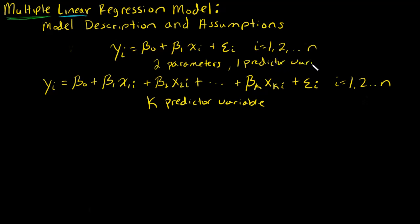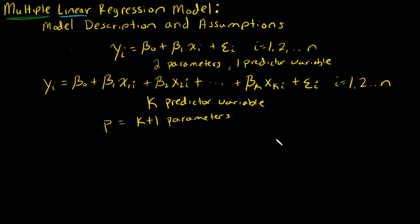How many parameters do I have? I have 1, 2, all the way to k, plus 1 because of the intercept, so I end up having k plus 1 parameters. This k plus 1 is a lot of times called p, so p equals k plus 1 and that's the number of parameters. So k predictor variables, p parameters, and p is just k plus 1.